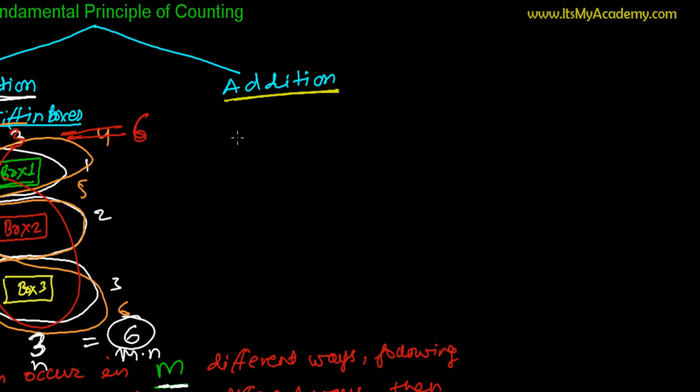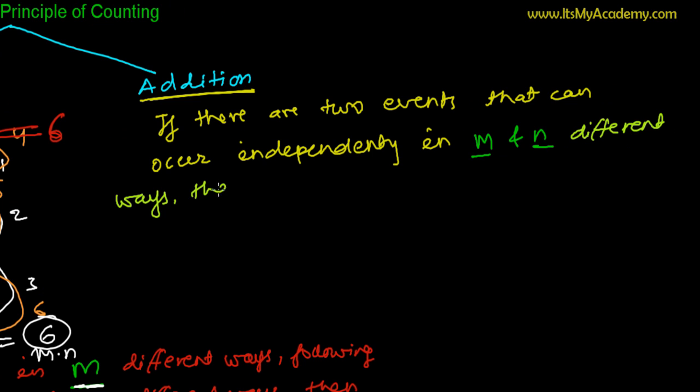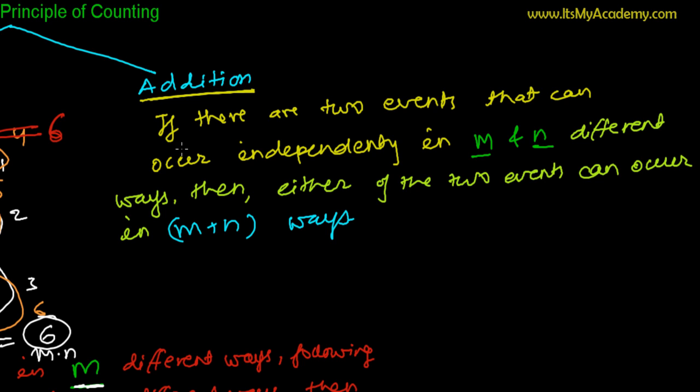The fundamental principle of addition states something like this: if there are two events that can occur independently in M and N different ways, then either of the two events can occur in M plus N ways.